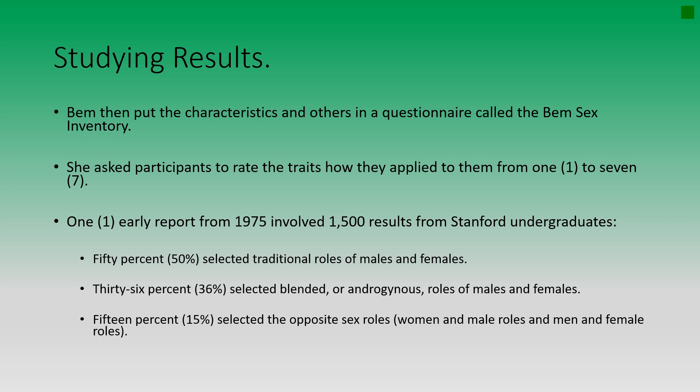An early report from 1975 involved 1,500 results from Stanford undergraduates. Fifty percent selected the traditional roles of males and females — men said they were assertive, self-reliant, and strong; females said they were caring and emotional. Thirty-six percent selected the blended or androgynous roles, where some males said they were emotional and caring, and females said they were assertive or self-reliant. Fifteen percent selected the opposite sex roles, with women selecting all male roles and men selecting all female roles.